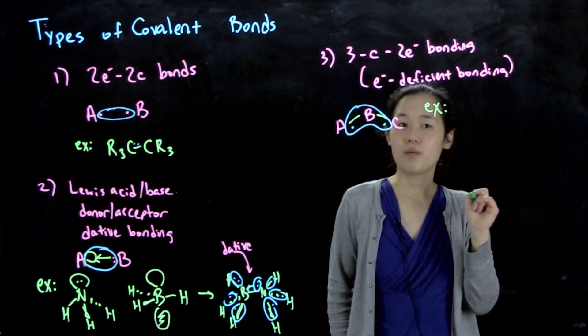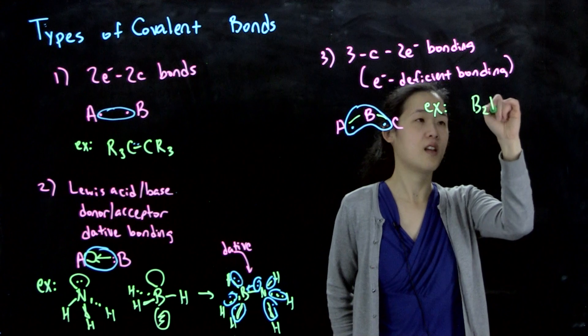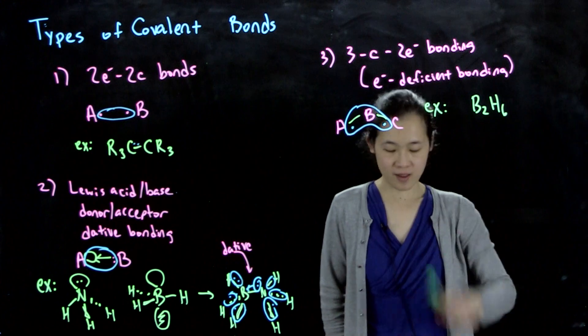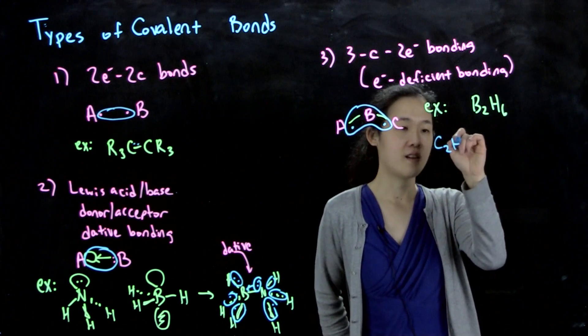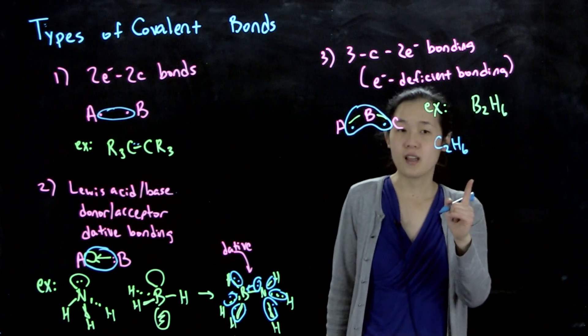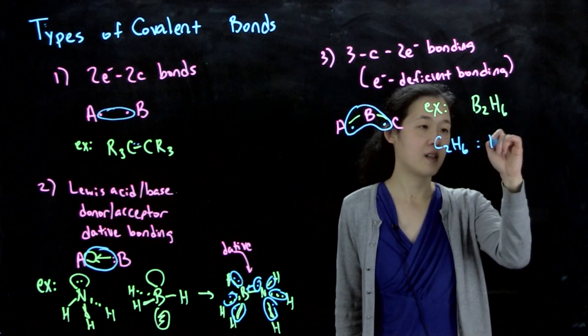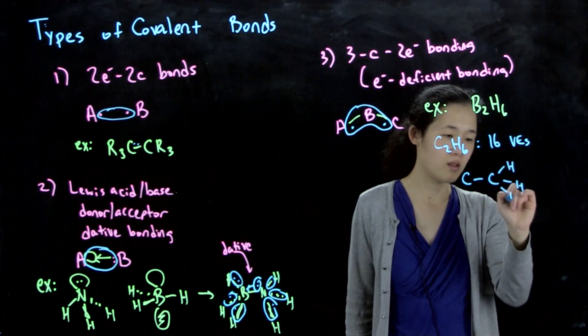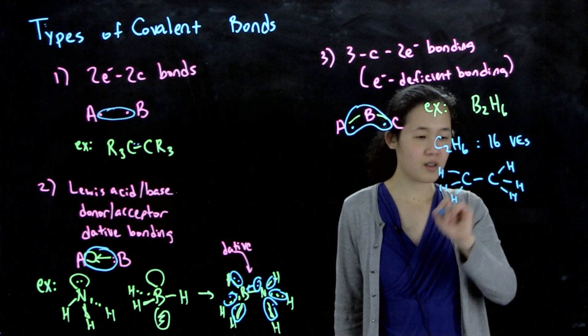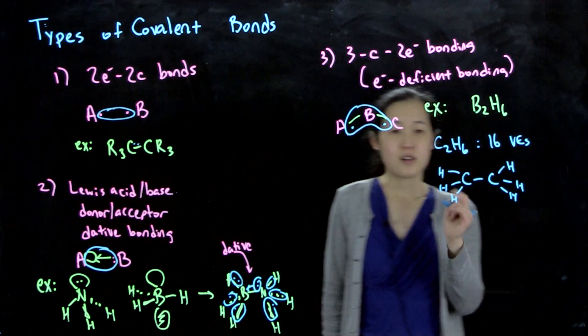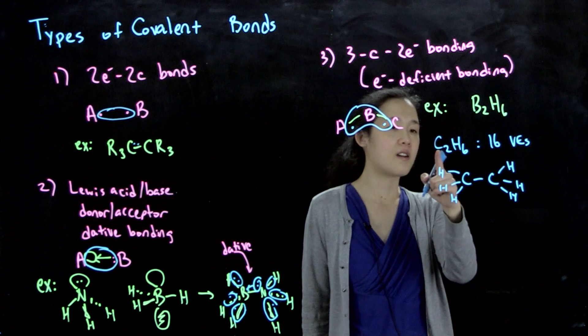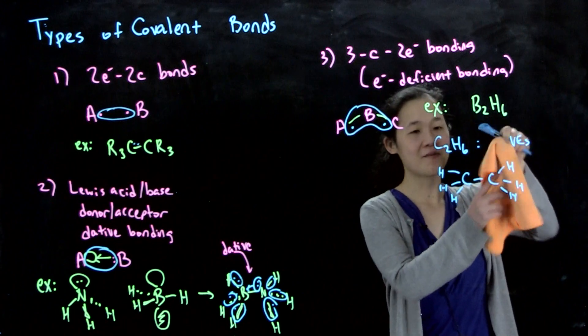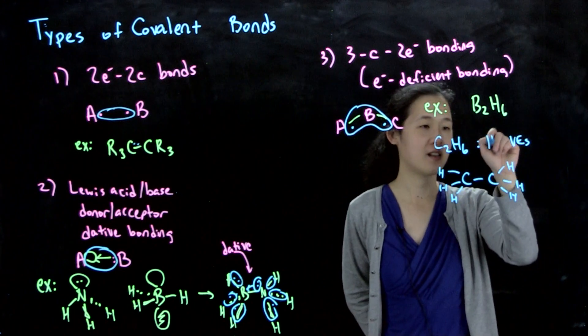Let's think about diborane, B2H6. If it were analogous to C2H6, which is ethane with 14 valence electrons (four from each carbon plus six), ethane has all normal two center two electron bonding.